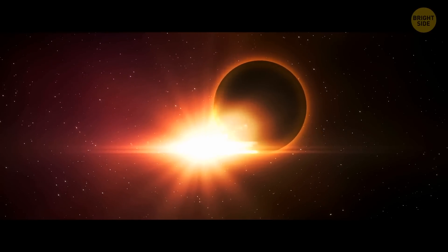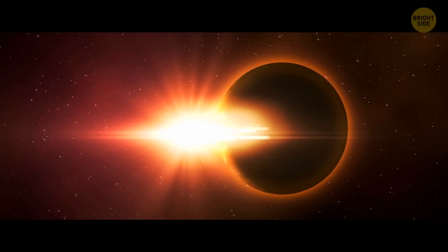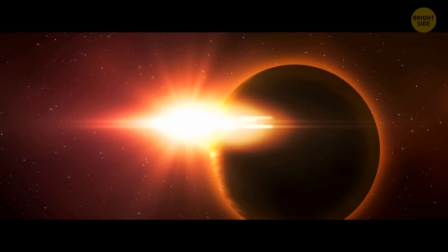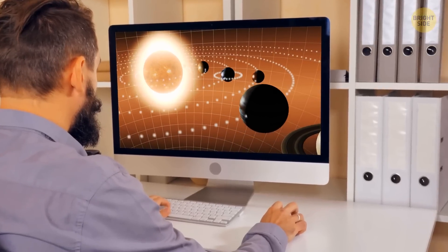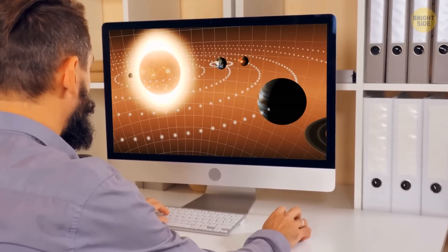And still, red dwarf Jupiter could prevent the inner planets from following their orbits. Because they wouldn't be able to find a balance between the gravitational forces of the two stars.